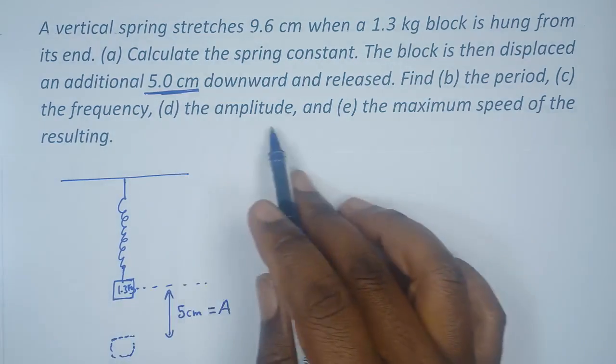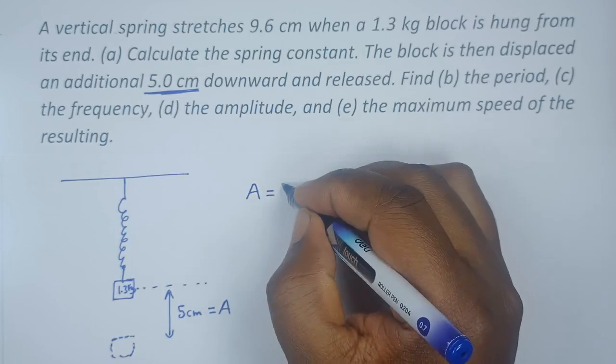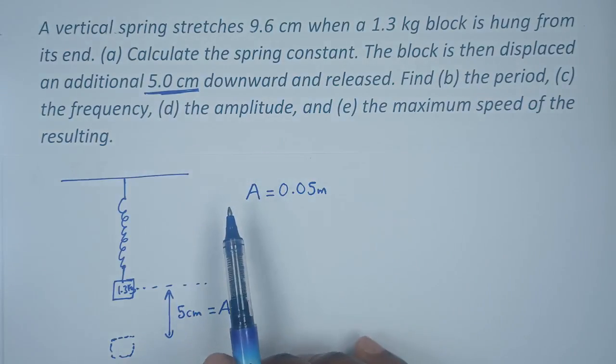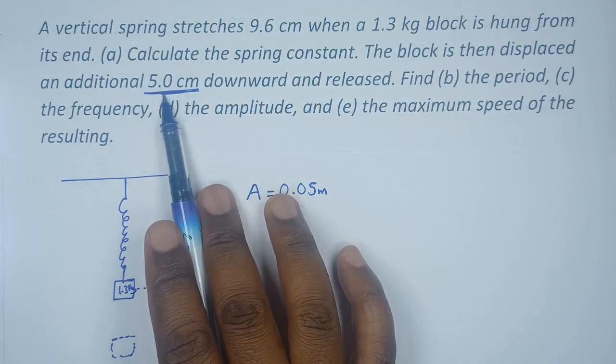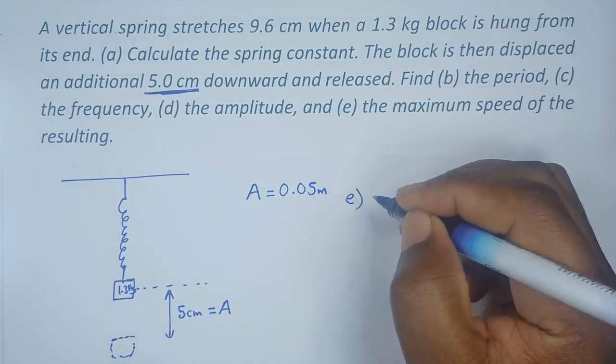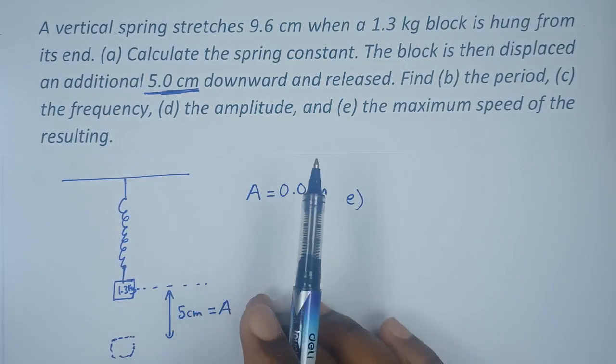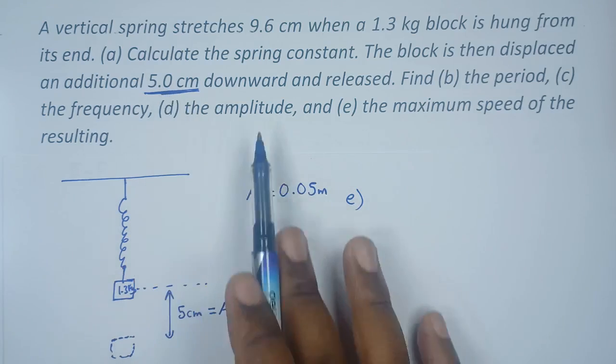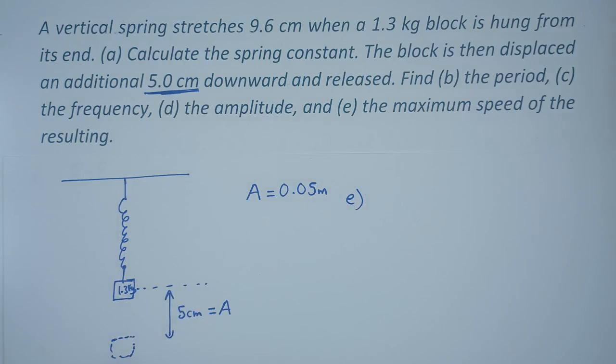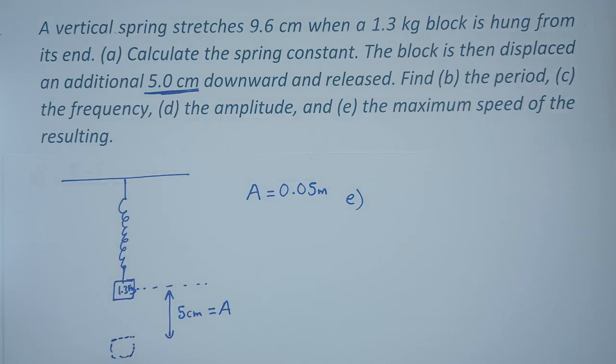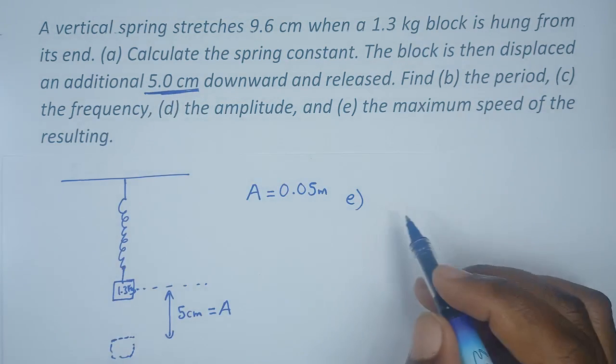It's easy to say that our amplitude equals 0.05 meters based on the statement. For the amplitude, you just have to give an explanation as to why you've decided the amplitude is 5 centimeters, and the explanation is simply because amplitude is the maximum displacement and an additional distance was added, so that particular additional distance gives us the amplitude.